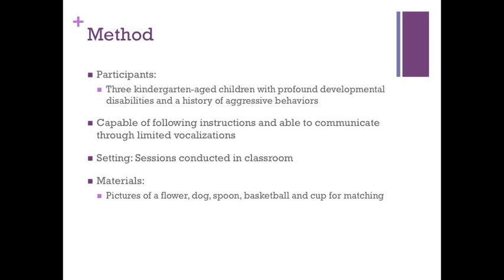Cole was a six-year-old male diagnosed with autism. He was capable of following instructions and was able to communicate through limited vocalization. Nate was a five-year-old male with profound intellectual disability who had no expressive or receptive language skills but was capable of following instructions. Ava was a seven-year-old female diagnosed with autism who had limited communication skills but was able to follow instructions and periodically displayed aggressive behavior when given a demand.